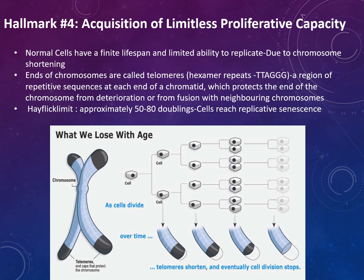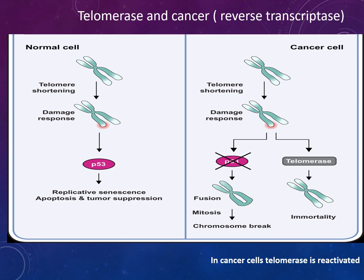The fourth hallmark involves acquisition of limitless proliferative capacity. Normal cells have a finite lifespan and limited ability to replicate due to chromosome shortening. The ends of chromosomes are known as telomeres — hexamer repeats of TTAGGG (thymine, thymine, adenine, guanine, guanine, guanine) — which protect chromosome ends from deterioration or fusion. The Hayflick limit states approximately 50 to 80 doublings results in cells reaching replicative senescence. In cancer cells, telomerase is reactivated, allowing continued division.